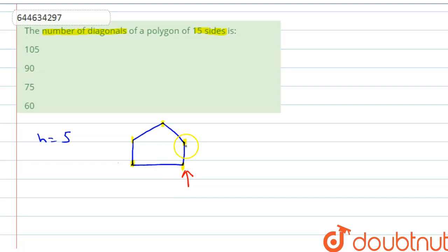This cannot be the diagonal, so we have to exclude this corner and this corner. The remaining two corners are there, which means for a polygon, we have to remove three points first.